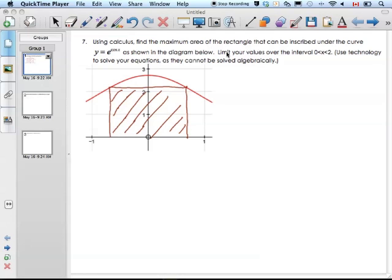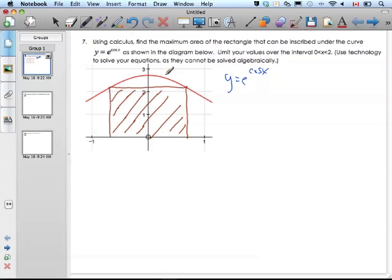The maximum area of the rectangle that can be inscribed underneath this curve. This curve is y equals e to the cosine of x. That's this red curve.